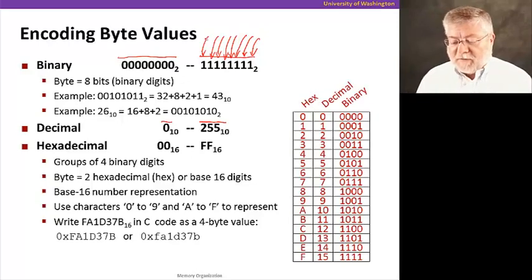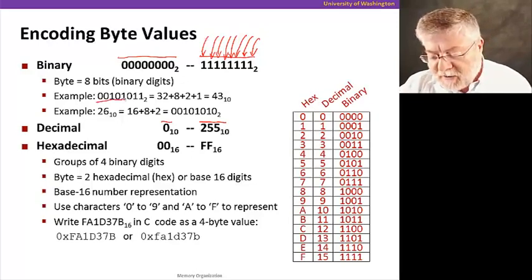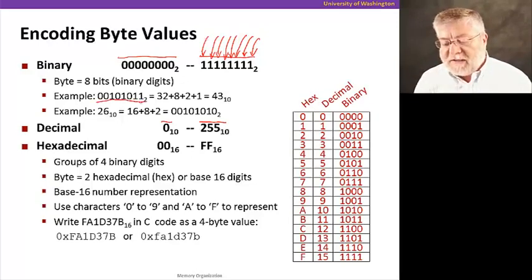As a little example, let's take a look at this number here: 00101011. That corresponds to a one in the thirty-twos column, a one in the eights column, a one in the twos column, and lastly a one in the ones column. When we add those values, we get the decimal number 43.